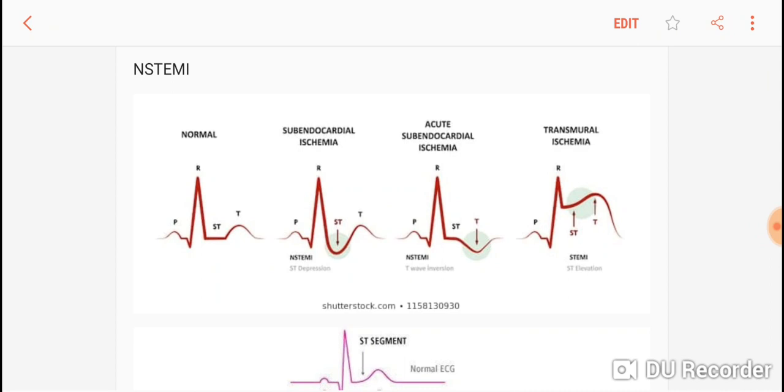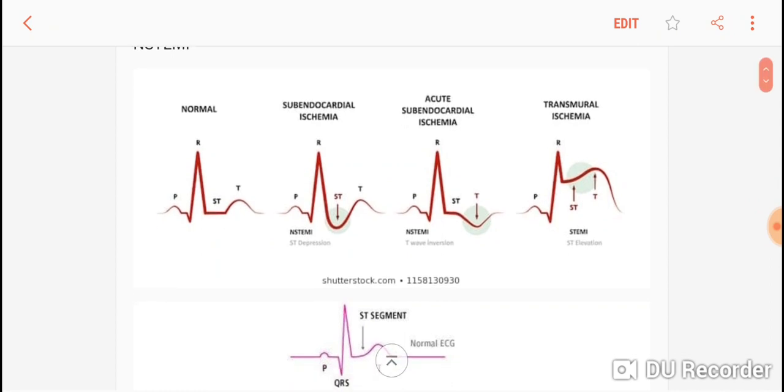First figure is a normal ST segment, T wave is upright. In the second figure you see an ST that is depressed, it's gone to the downside, T wave is upright. It can be an NSTEMI, non-ST elevation MI. It's an MI but the ST segment is not elevated.